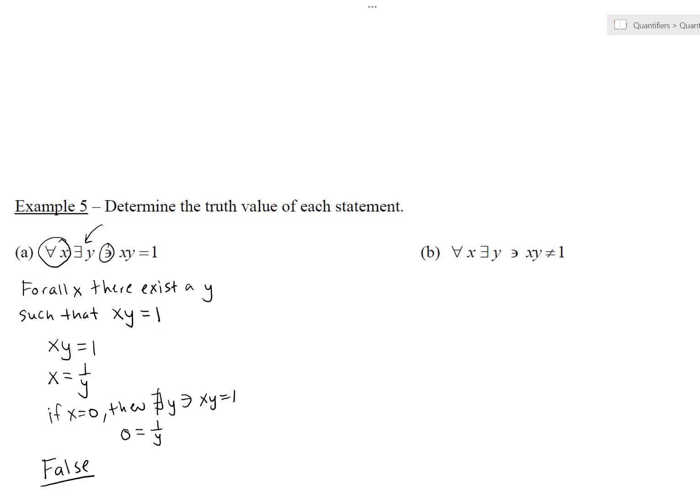Second one. Let's write this one out too. Part B. For all X, there exists a Y value such that X times Y is not equal to one. And so again we could solve the equation X equals one over Y. But rather we want to know if no matter which X value, there is some other Y so that this is not true.